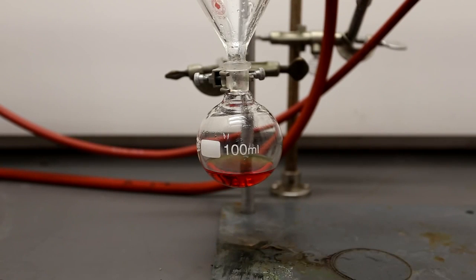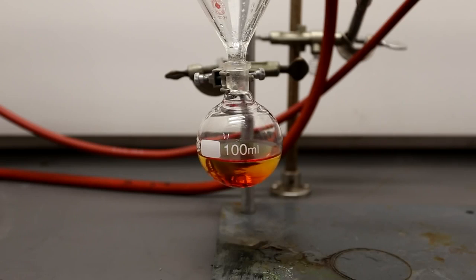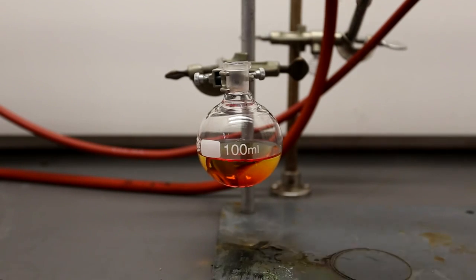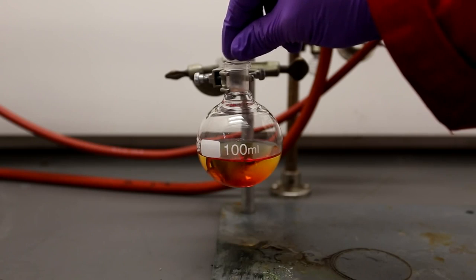After the distillation, the dilute hydriodic acid in the trap was added to the collecting flask. Then, a few boiling stones were added.